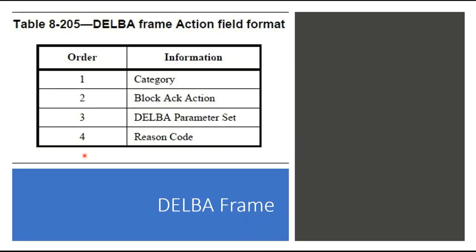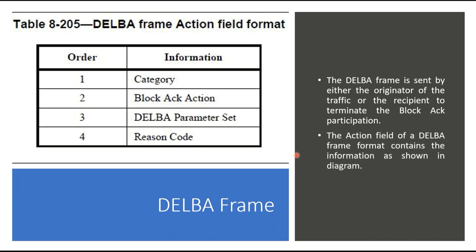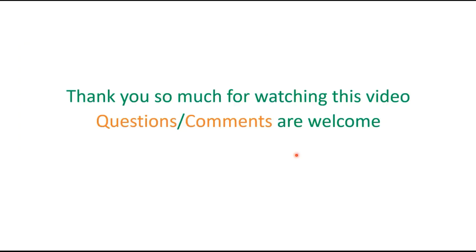The DelBA frame — Delete Block Acknowledgement Request — can be sent by either side: the originator or the recipient. The basic purpose of this frame is to terminate the Block ACK participation. The action frame of the DelBA frame format contains the information as shown in the diagram.